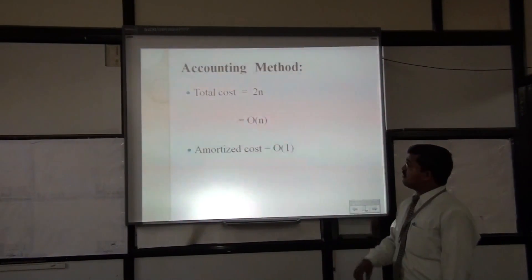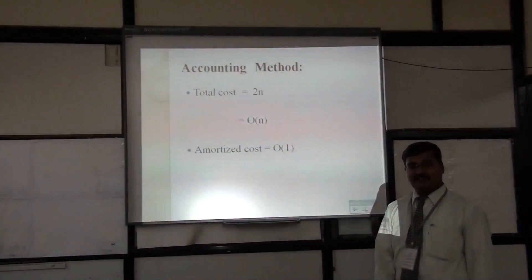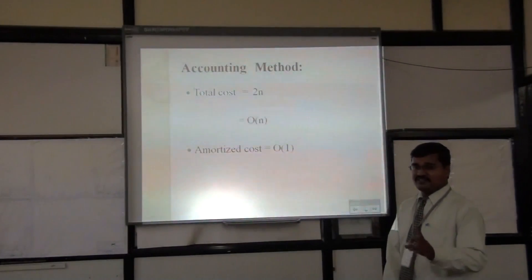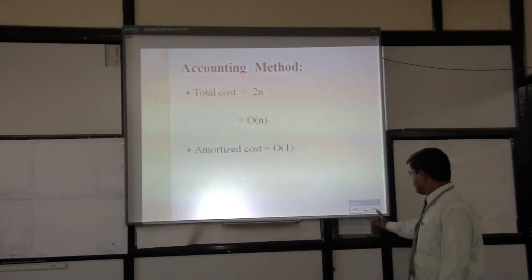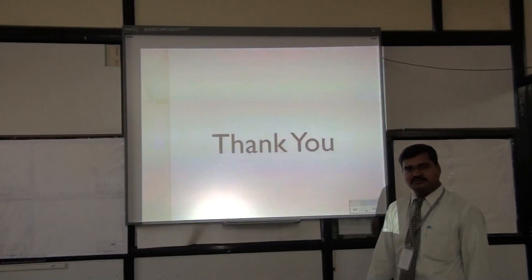In the accounting method, the total cost is 2N, and the amortized cost for a single operation is O(1). Thank you.